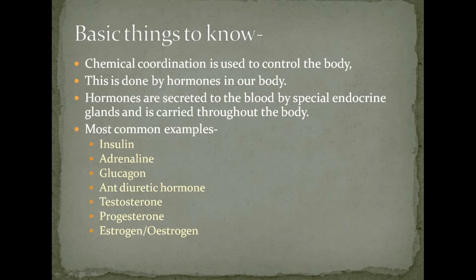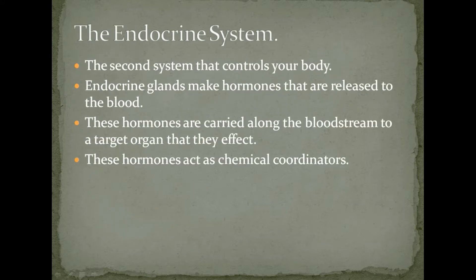So the basic things you should know about chemical coordination — it all comes from the endocrine system. Chemical coordination is used to control the body, and this is done by hormones in our body which are secreted by specific glands. Hormones are secreted by special endocrine glands and carried throughout the body. The most common examples are insulin, adrenaline, glucagon, anti-diuretic hormone, testosterone, progesterone, and estrogen.